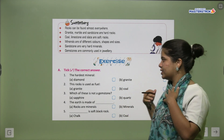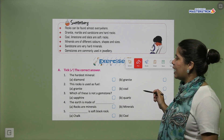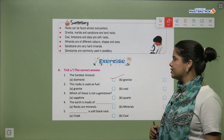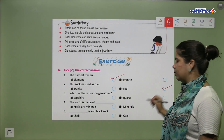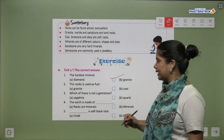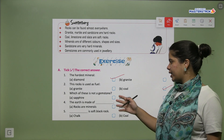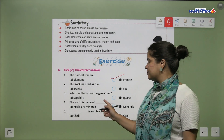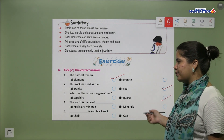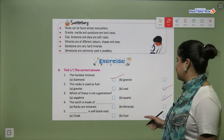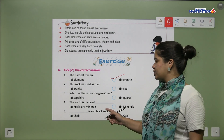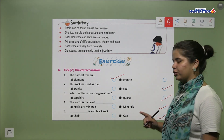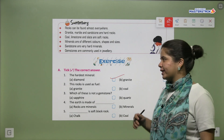Now let's tick the correct answers. The hardest mineral is diamond. Coal is used as a fuel. Which of these is not a gemstone — sapphire or quartz? Quartz is not a gemstone; sapphire is a gemstone. The earth is made up of minerals. Coal is a soft black rock.